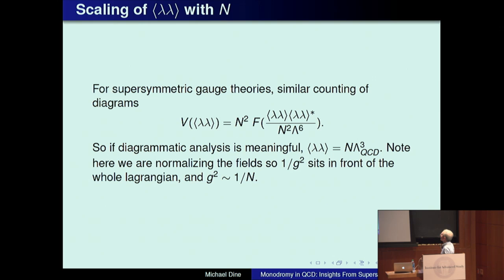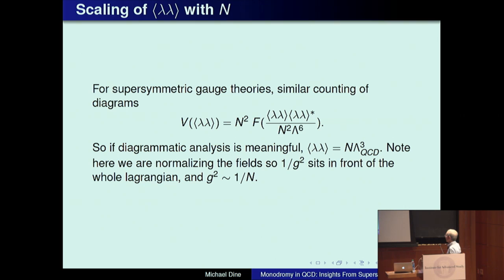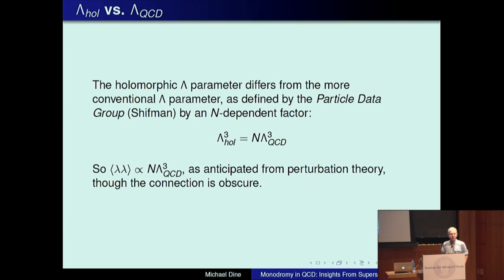For lambda-lambda, there's a very similar story. One writes down similar diagrams with an overall N squared instead of N, but the scaling is the same — lambda-lambda over N squared. Remember I'm normalizing the fields so that 1 over G squared sits in front of the Lagrangian, and G squared goes like 1 over N. So lambda-lambda in terms of the physical parameter lambda QCD should go like N.